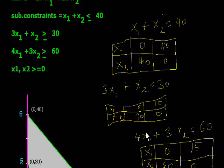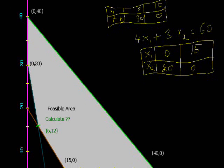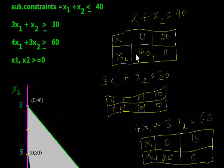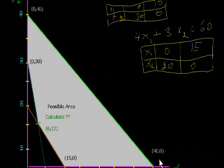Now put all these table values on the graph paper. This is X1 and the Y-axis is X2. So first we draw this line: if X1 is 0, X2 is 40. If X1 is 40 and X2 is 0.